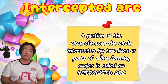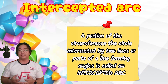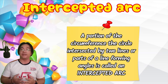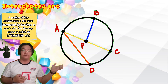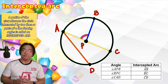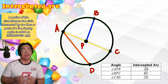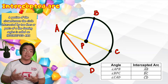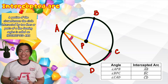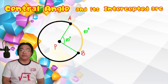An intercepted arc is a portion of the circumference of a circle intersected by two lines or parts of a line forming angles. In this given figure, angle APB has an intercepted arc of arc AB, angle BPC has an intercepted arc of arc BC, and angle CAD has an intercepted arc of arc CD.